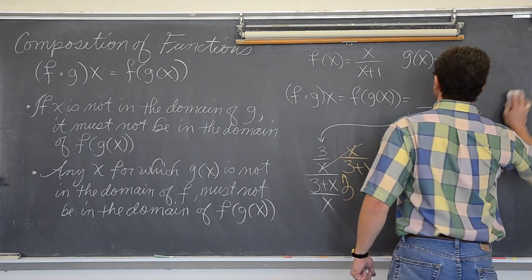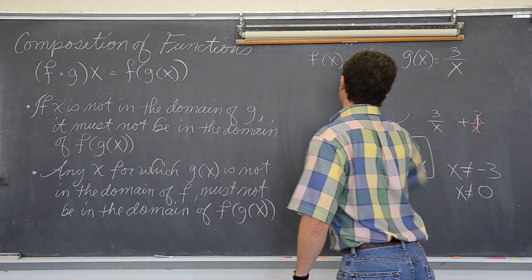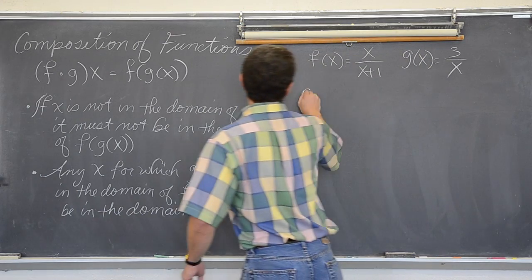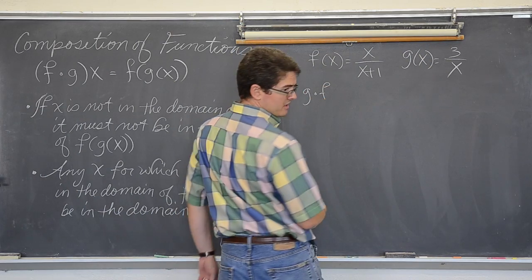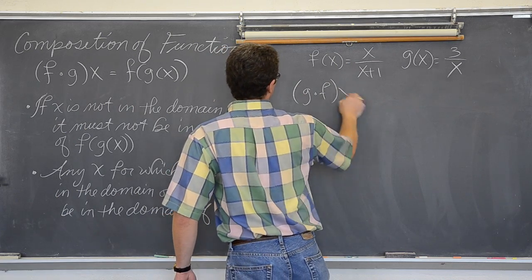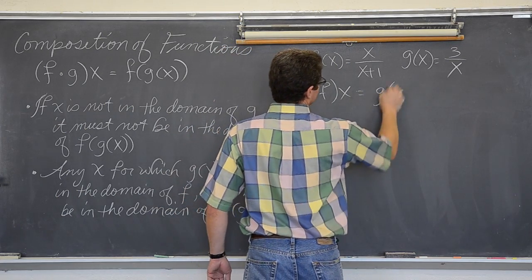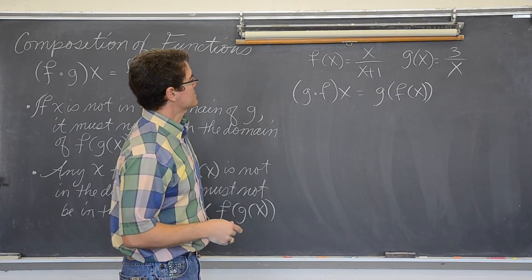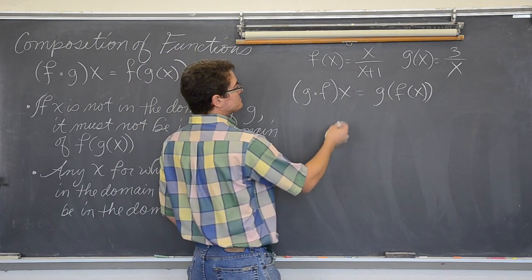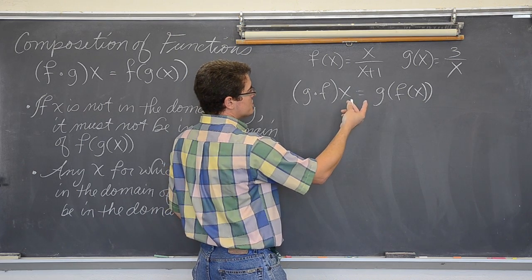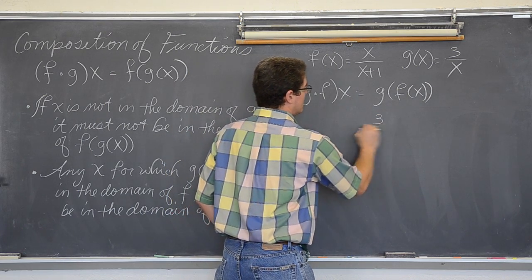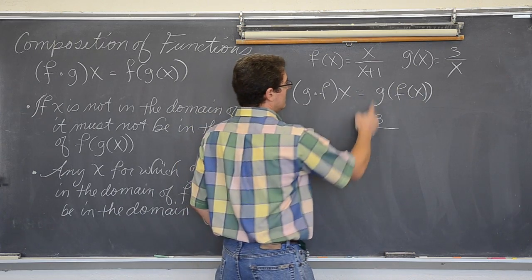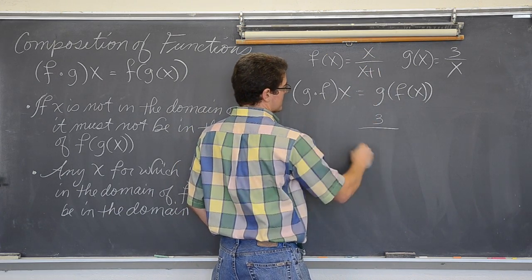Let's look at the other direction. What is g of f of x? Excuse me, g of f of x. Or g of f of x. Well, that is going to be... The framework is g, so it is going to be 3 over something. And what is that something that we are plugging in? Well, the something we are plugging in is x over x plus 1.